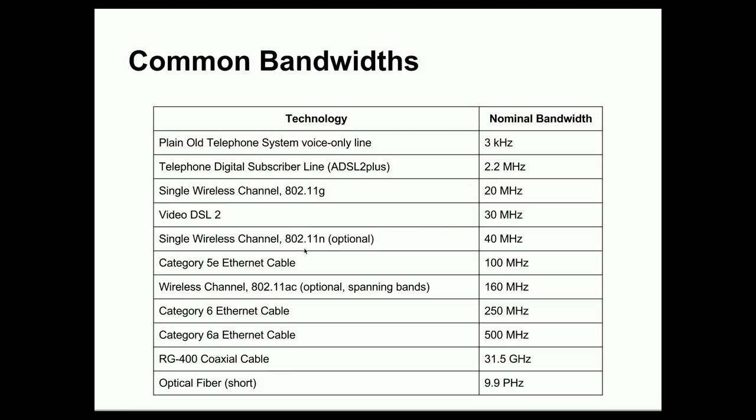The 802.11 N standard provides an optional way to use a single channel of 40 MHz bandwidth. That's still less than a Category 5 Ethernet cable, however, which has 100 MHz nominal bandwidth. The newest standard, or newest at the time that I recorded this lecture, and this should give you an idea of the age of this lecture by the time you watch it. The newest 802.11 AC standard, optionally spanning the 2.4 and 5 GHz bands, can support a single channel with a nominal bandwidth of 160 MHz. But that's still less than the equivalent new form of wired Ethernet with Category 6 Ethernet cable at 250 MHz, or double to 500 MHz for Category 6A cable.